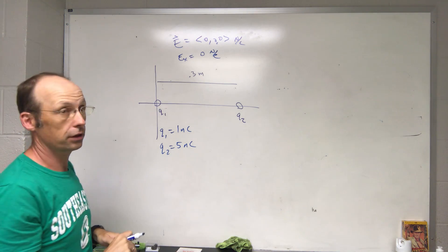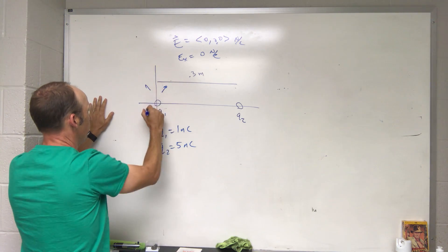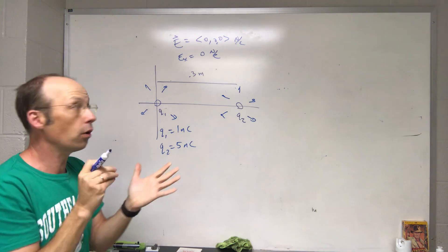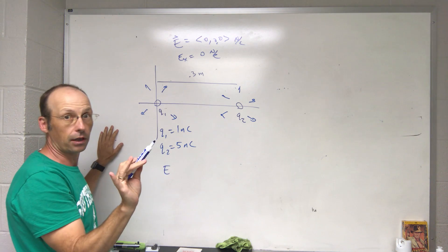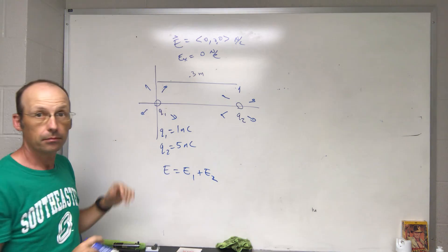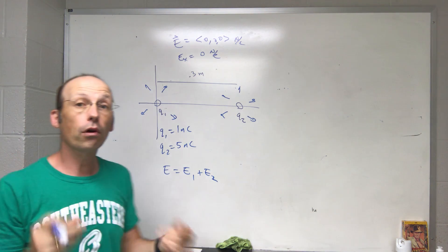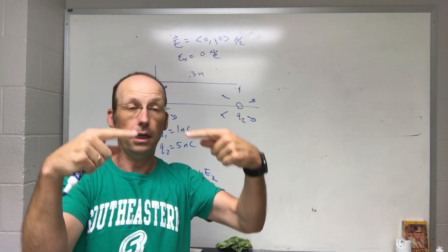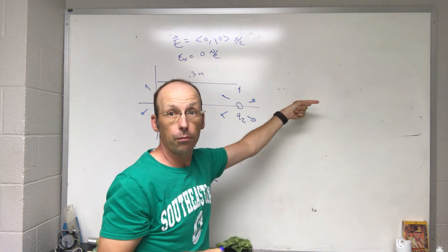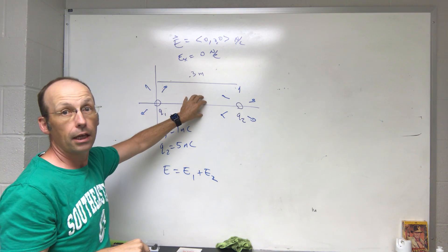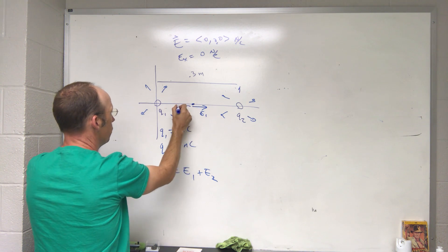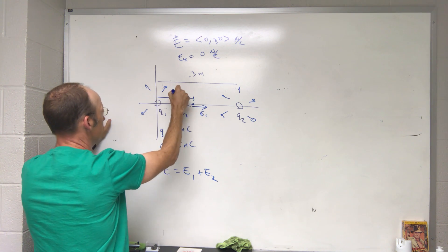Let's think about the electric field due to these two charges. The positive charge at the origin radiates outward, and q2 does the same. For the total electric field to be zero, E1 plus E2 must equal zero — treating these as scalars in the x-direction. To the left of q1 or to the right of q2, both fields point the same way. The only region where they oppose each other is somewhere in between, at distance x from the origin.